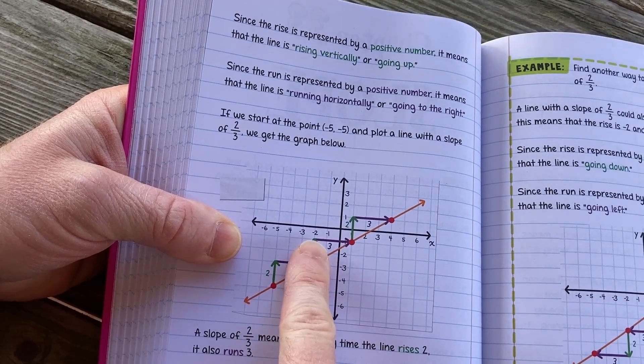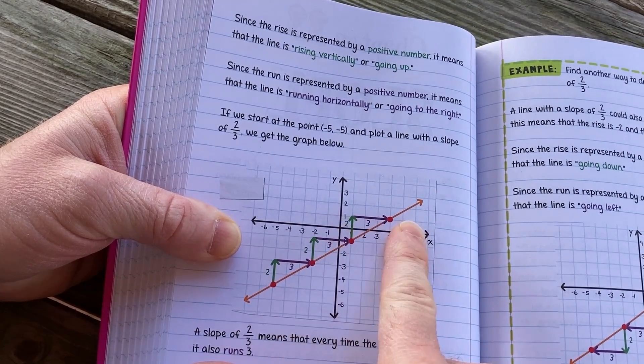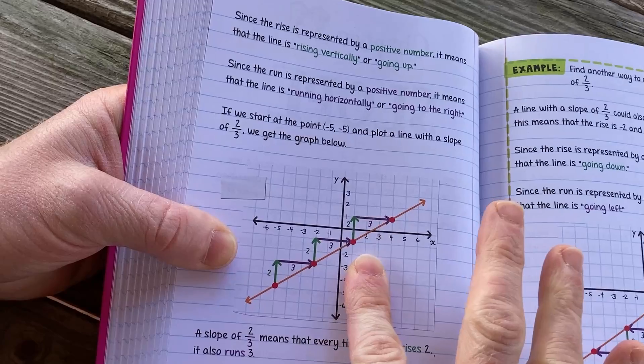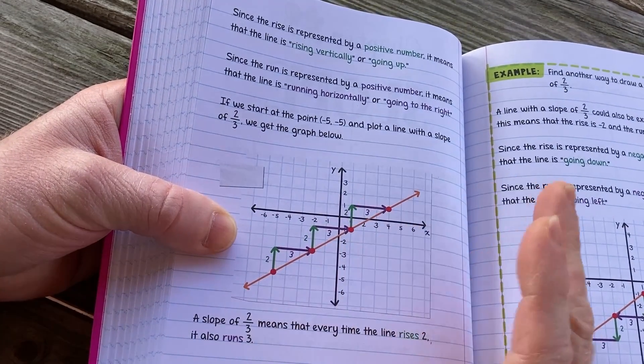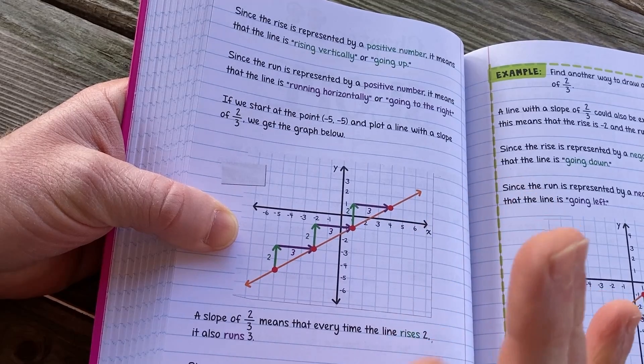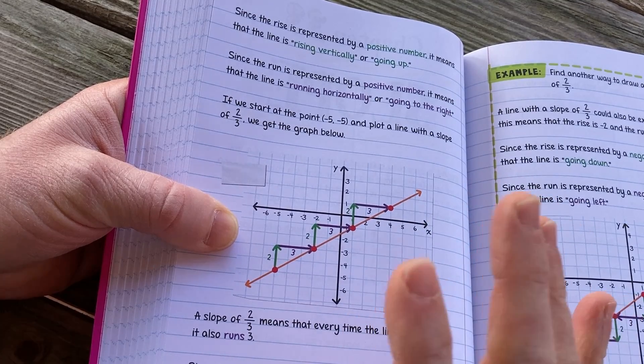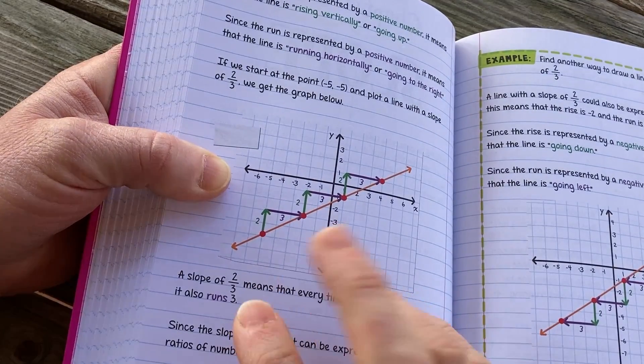So here they have a really beautiful example. Look how well drawn this is. If we start at the point negative five, negative five, which is here, and plot a line with a slope of two-thirds, we get the graph below. So you rise two, run three, rise two, run three, rise two, run three. Beautiful example, just crystal clear. It's not your typical graph like you see in most books. It's got colors. I mean, just a fabulous work of art. Even the writing is kind of fun. They use a fun font.